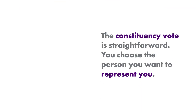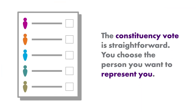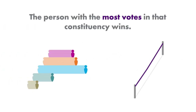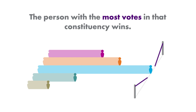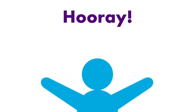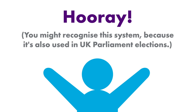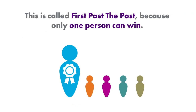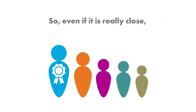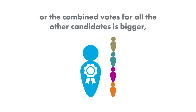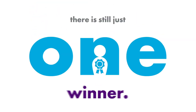The constituency vote is straightforward. You choose the person you want to represent you. The person with the most votes in that constituency wins. You might recognise this system because it's also used in UK Parliament elections. This is called first-past-the-post because only one person can win. So even if it is really close, or the combined votes for all the other candidates is bigger, it's still just one winner.